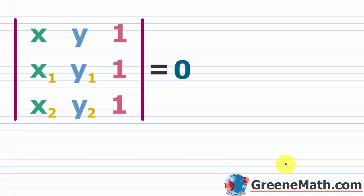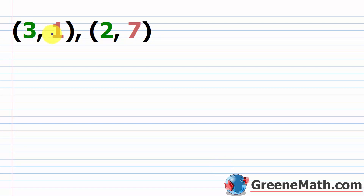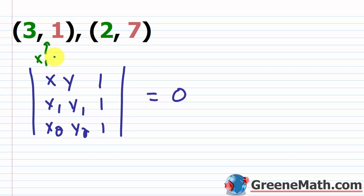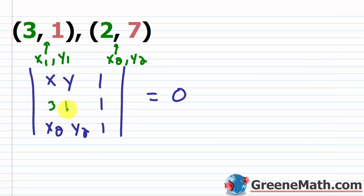Let's look at an example — this is not a hard concept. We're given the two points three comma one and two comma seven, and we want to find the equation of the line through those points in slope-intercept form. Plugging into the formula, the first row is x, y, 1; the second row is x₁, y₁, 1 — so three and one; the third row is x₂, y₂, 1 — so two and seven. This determinant is set equal to zero.